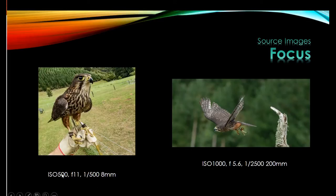This one is taken at f/11 and there's a falcon actually sitting on my glove with an 8mm lens — you can see both the falcon and the background are in focus. Whereas the next one across is a 200mm lens, and you can see how the background is blurred out. There's a little bit of a difference in f-stop there but it's still going to give you greater depth of field on the 8mm and a shallower depth of field on the 200mm.